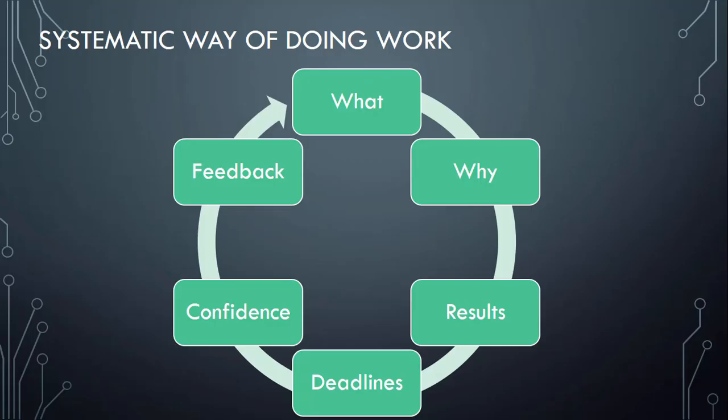What is the systematic way of doing work? The first step is clarity about what you must do. You should be able to answer: what must I do, what decisions must I take, what actions do I have to take? Answering these questions will give you the direction for actions. It is logical that before doing anything, you must know what you have to do. Once you have answered this, you know the decisions and necessary actions to support them.